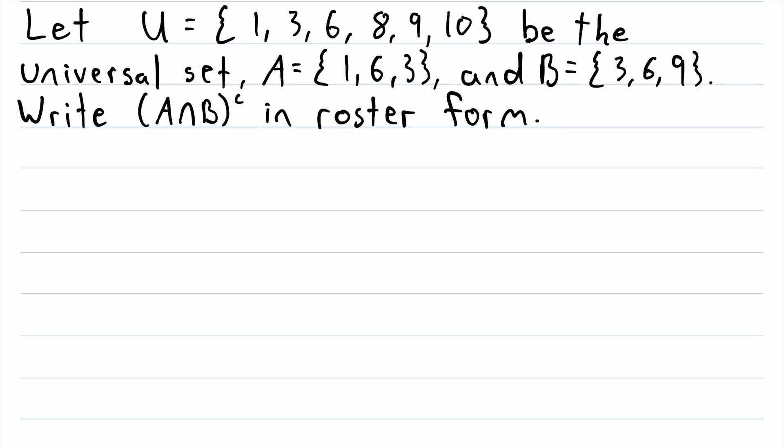So, this is decently straightforward. All we have to do is find A intersect B, take the absolute complement of that, and then that's our answer. We just have to write it out by listing the elements. So let me just write our two sets here. A is the set containing 1, 6, and 3, and B is the set containing 3, 6, and 9.